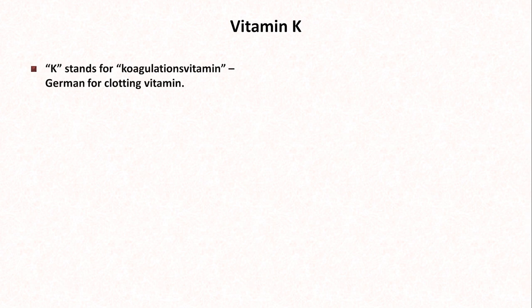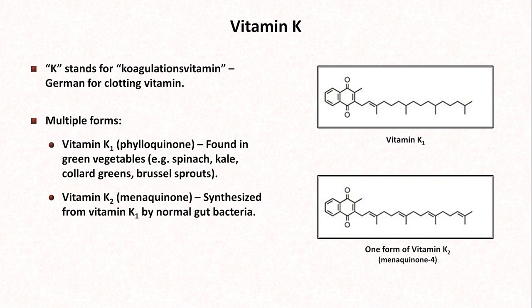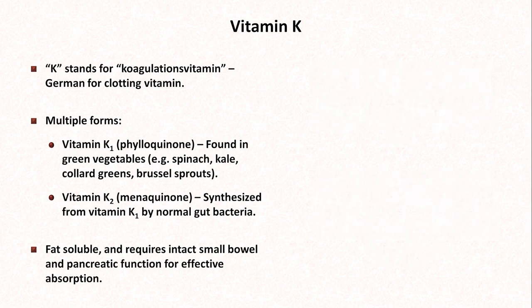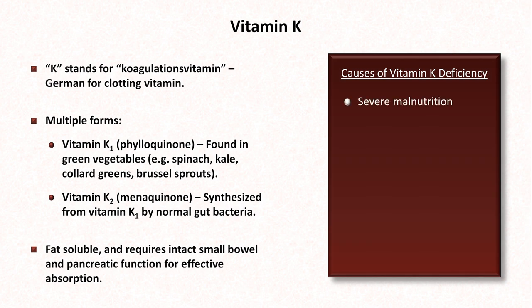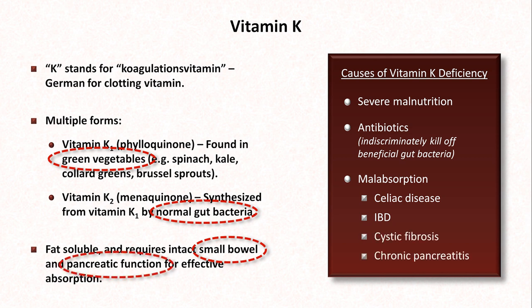Moving on from hemophilia, let's discuss acquired coagulation deficiencies. Some of these have to do with vitamin K. The letter K comes from the German word for clotting vitamin. It is necessary for the post-translational modification of several enzymes in the clotting cascade, and a deficiency can lead to problems with coagulation. Vitamin K1 is found in green vegetables, while vitamin K2 is synthesized by normal gut bacteria. Vitamin K requires intact small bowel and pancreatic function for effective absorption. Causes of deficiency include severe malnutrition, antibiotics that kill off beneficial gut bacteria, and malabsorption from conditions such as celiac disease, IBD, cystic fibrosis, and chronic pancreatitis.